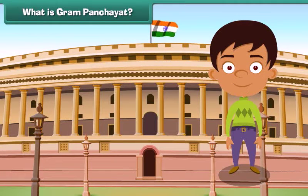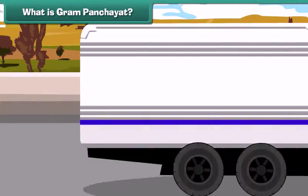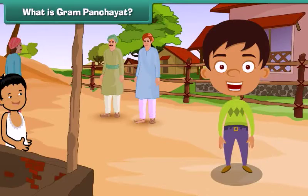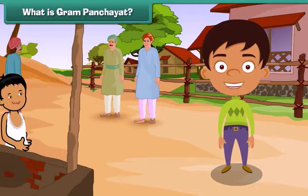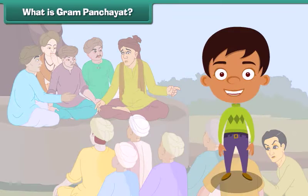What is Gram Panchayat? We all know that governments in the states and union territories maintain law and order in their cities and look after the needs of their city dwellers. The village local government, known as village Panchayat or Gram Panchayat, is responsible for keeping law and order in villages and meeting the requirements of villages. Let us now understand the structure of the Gram Panchayats in detail.